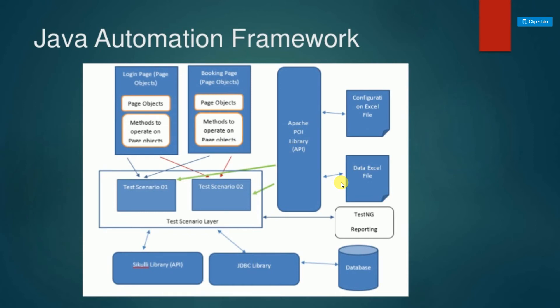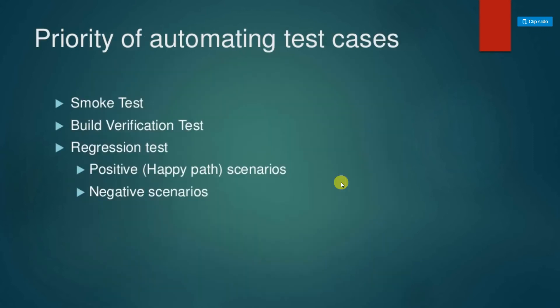We use Apache POI for data-driven capability, reading config files for URLs, user credentials, and other data. Scripts should be executed with parameterized URLs, user credentials, and data to create multiple users or products in the application under test. For reporting, TestNG reporting is available, but there are richer options like Allure reporting, ATU reporting, and ExtentReports. We can also use SikuliX library for components Selenium cannot locate, and JDBC for database verification and importing data into the test automation suite.